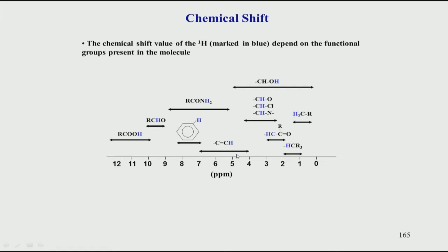For sp2 hybridized carbons such as ethylene groups, there is again a downfield shift. We discussed that the sp2 hybridization state of the carbon is an influencing factor in chemical shifts. Because of that, the hydrogen becomes more downfield shifted and comes in a broad range of chemical shifts.